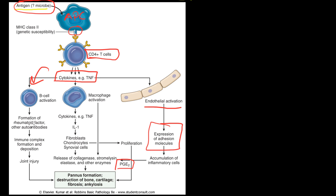Now we're going to talk about this B-cell pathway. B-cells get activated. There's a formation of rheumatoid factor or other antibodies. Then this immune complex type 3 hypersensitivity disease pathway happens. You have formation and deposition, then joint injury, which leads to pannus formation.